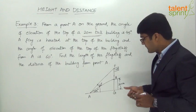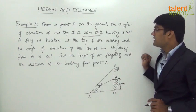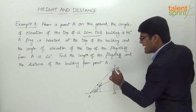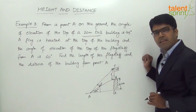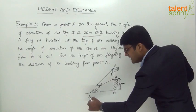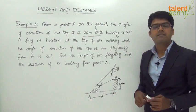We are required to find two things: the length of the flag staff, which we'll call L, and the distance of the building from point A, which is the distance AG, which we'll call D.